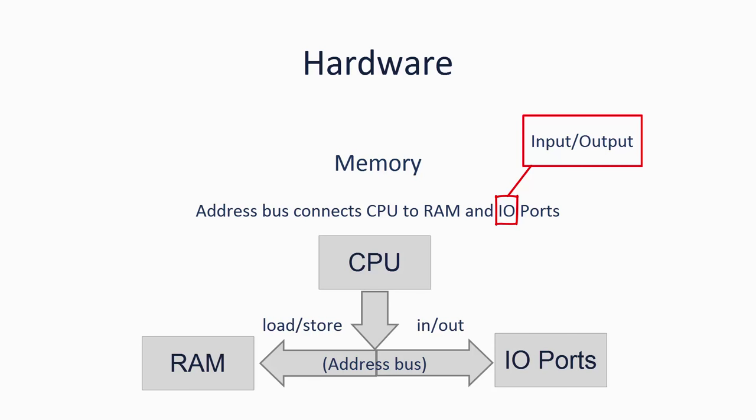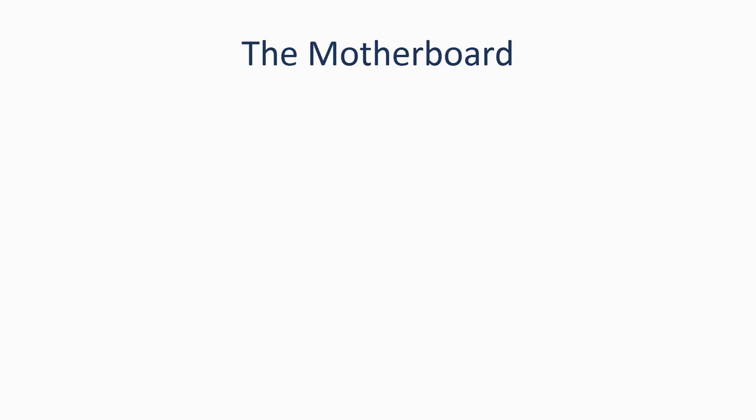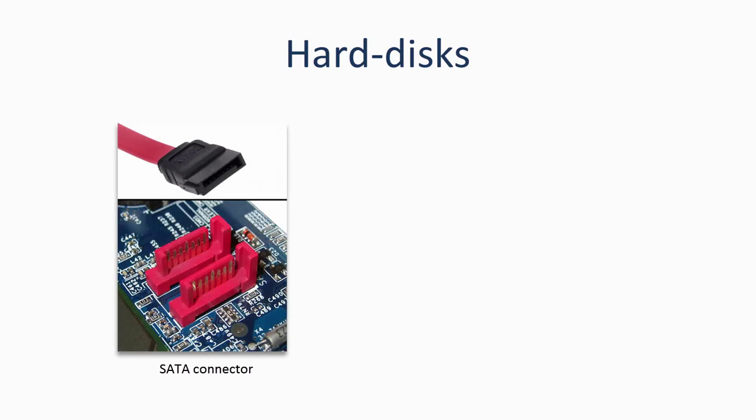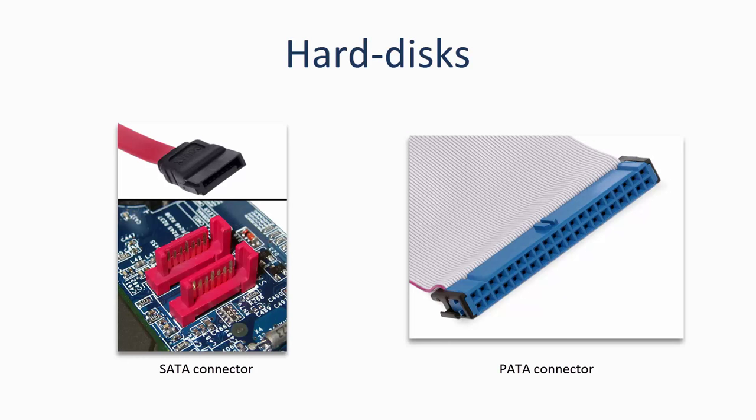What I have described is roughly a single core processor, which for our purposes is more than enough. The processor, RAM, and I/O ports are attached to the motherboard, which also has connectors for hard disks, USB ports, and more. Hard disks have their own special connectors — nowadays that connector is called a SATA or serial ATA connector. This is relatively recent however, and many old laptops and PCs still have PATA connectors, which stands for parallel ATA, or at least support for PATA over SATA.